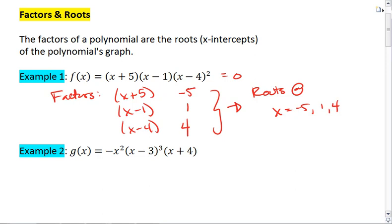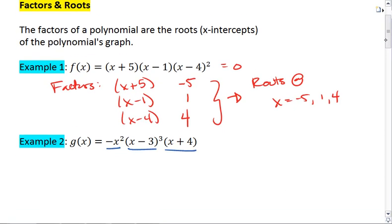Let's look at another example. We have g(x) = -x²(x-3)³(x+4). This one has factors of x², (x-3), and (x+4).